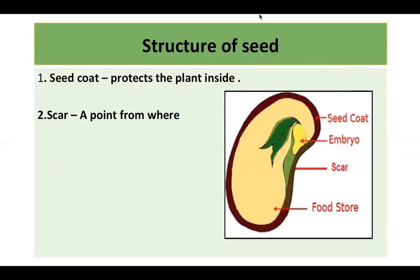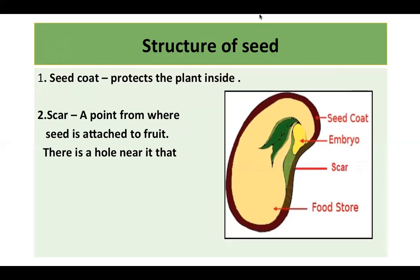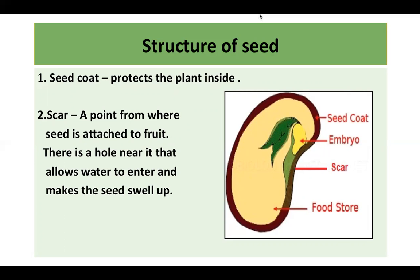Next, there is a small scar — a point from where the seed is attached to the fruit. Near it, there is a hole that allows water to enter and makes the seed swell up. Water enters into the seed, the seed swells up, and because water has entered, the process of germination will start.